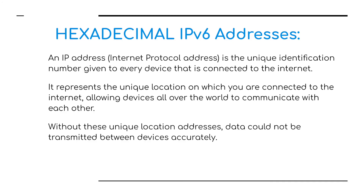Next is the IP address — the internet protocol address. This is a unique identification number that every device connected to the internet has. This is where confusion with the MAC address can arise: the IP address represents the unique location at which you are connected to the internet, allowing devices all over the world to communicate with each other. It works a bit like a postal address — the internet needs to know where you are in order for you to receive emails and for devices to communicate.